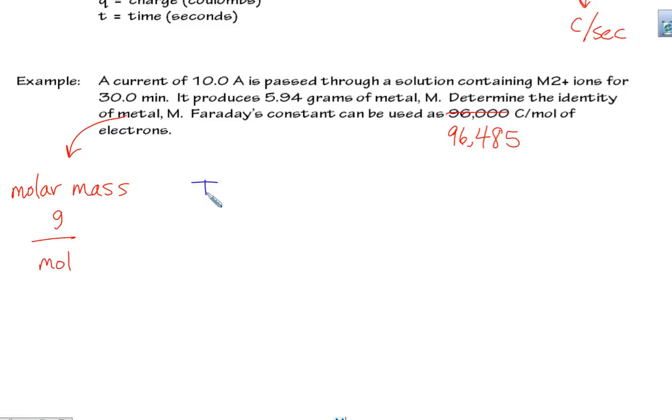We can use this I current equals q charge per time, and we'll just kind of plug and chug. We'll see what we have. We have the current, 10 amps. What else do we have? We have the time, 30 minutes. But this equation is in units of seconds for time, so if we have minutes, there should be 60 seconds in a minute. We're going to plug this in as 1,800 seconds.